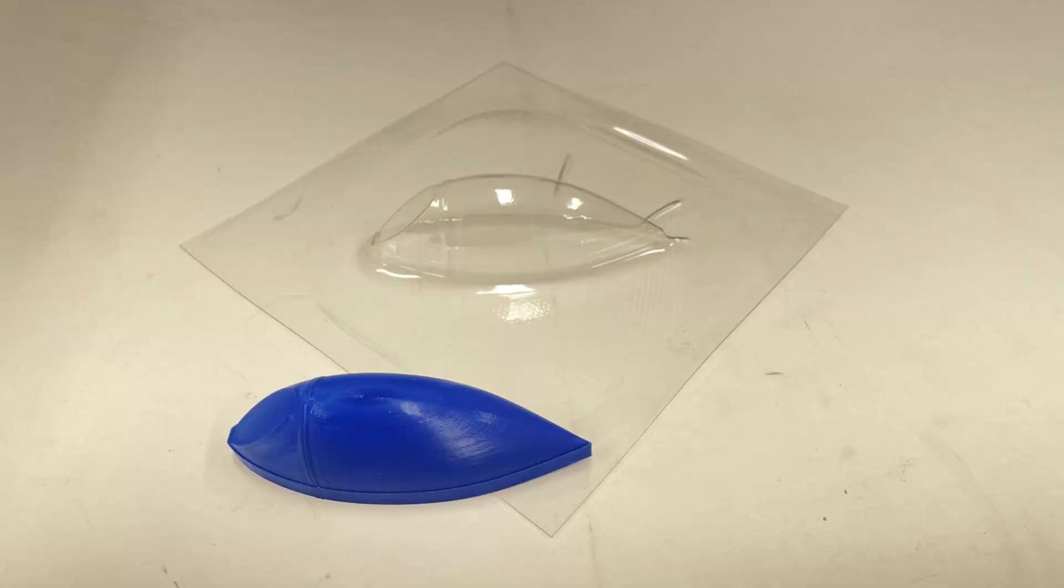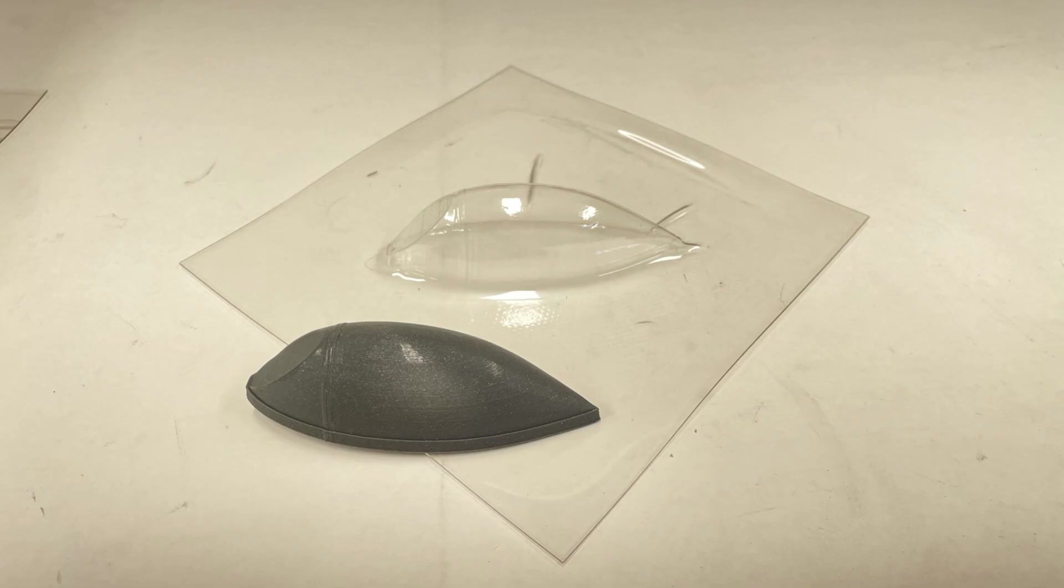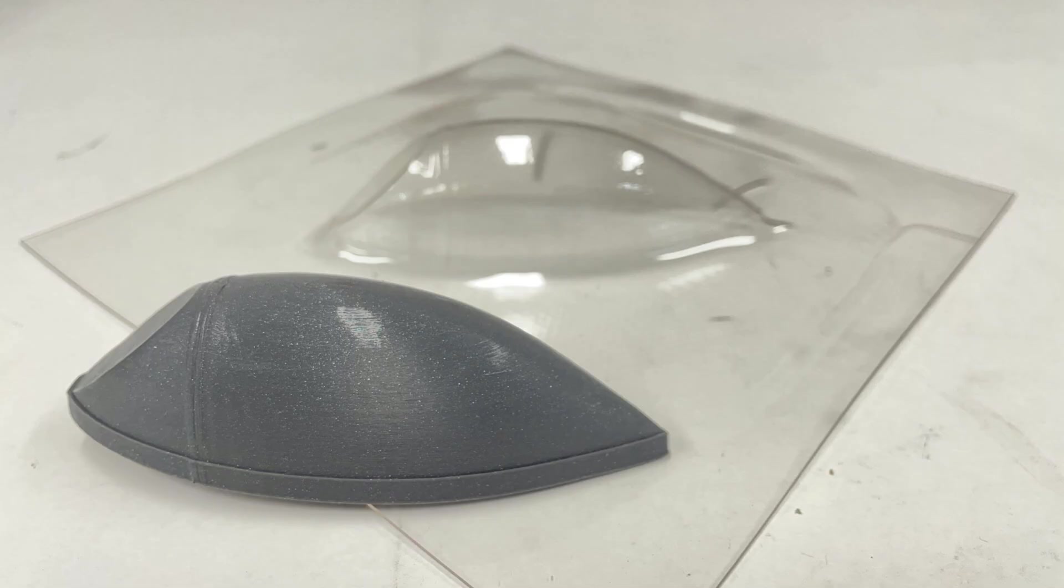But number two here worked virtually perfect. Again, ignore those wrinkles on the flat part on the bottom. Those don't matter as long as it's not on the part that you're going to cut out and use. And I really like the way this one worked just because of the output of the product that I was doing. Number three here also was another winner. So basically, number two and three worked flawlessly.